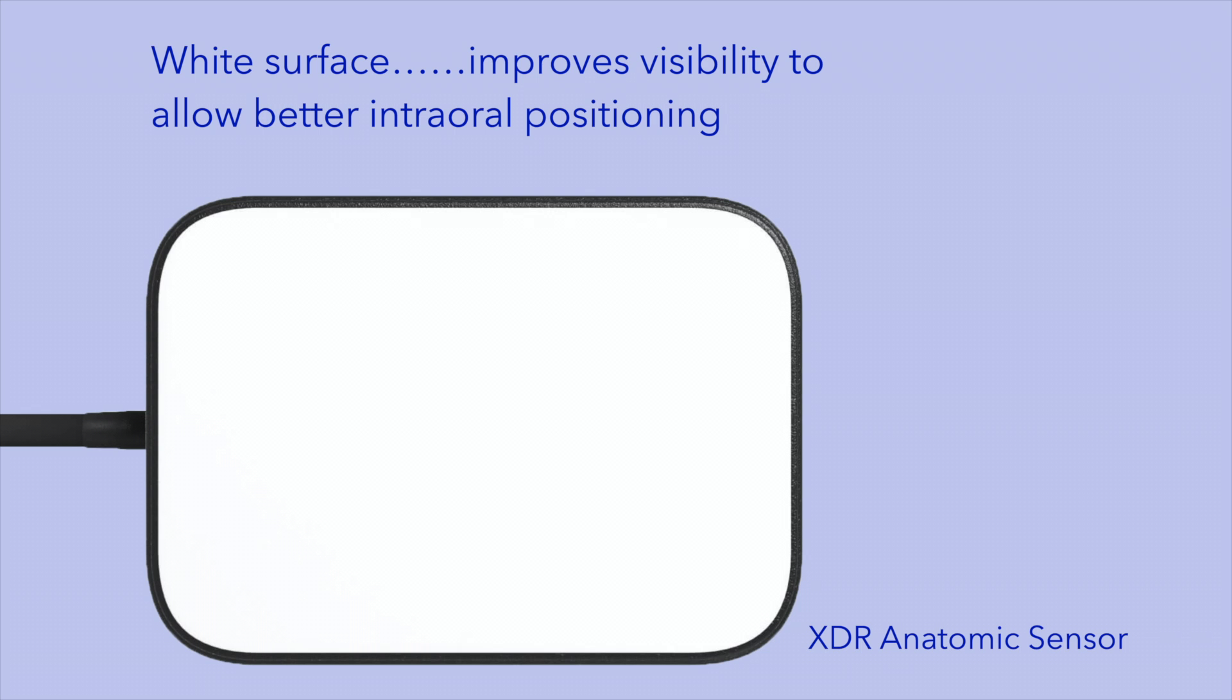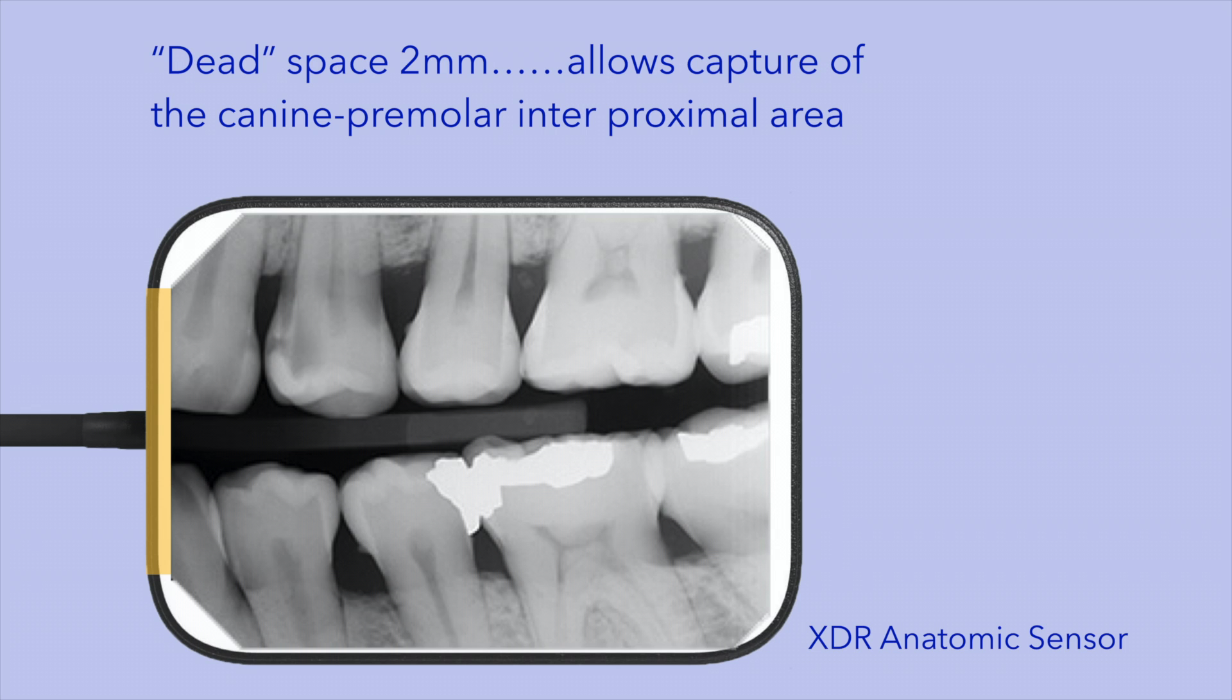It is important to note that the entire surface area of the sensor does not capture the image. This is because space is required for some electronic components. As a result of this design, there is some so-called dead space between the edge of the sensor and the actual start of the imaging capture chip.